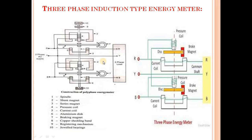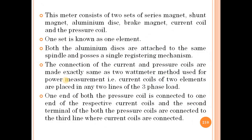This is a 3-phase load and the diagram is easy to understand. If we have a single phase induction type, this is the same diagram — you can use two sets. The explanation is very simple. The first point is: this meter consists of two sets of series magnets, shunt magnets, aluminum discs, brake magnets, current coils, and pressure coils. This meter has two sets.